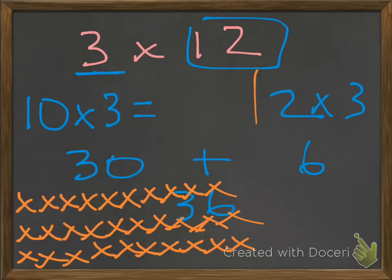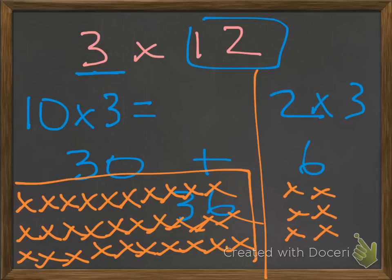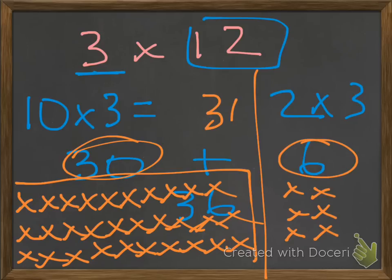And then over on this side, we're going to have the 6: 1, 2, 3, 4, 5, 6. So you can actually draw it out to help you see it. But we still come up with 30 on this side and 6 on this side. So our answer overall is 36.